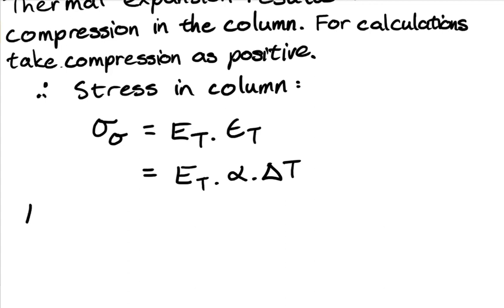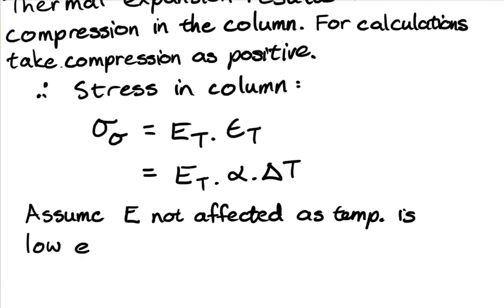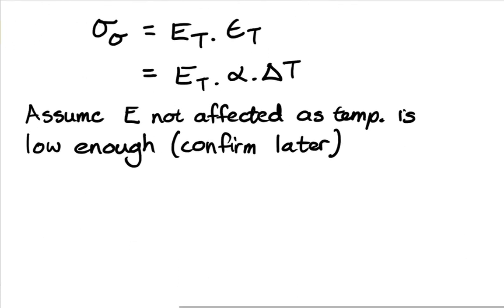But now assume E not affected. This temperature is low. This temperature is low enough. You'll see in this example, confirm later, that the temperature rise is low enough to get out of the linear zone of the column. So we're just going to have then a constant Young's modulus at the ambient temperature one.